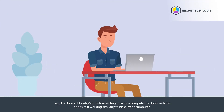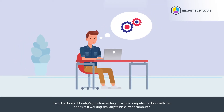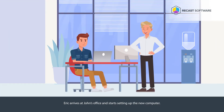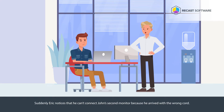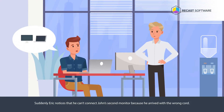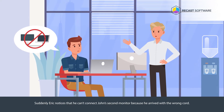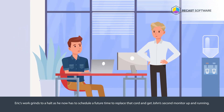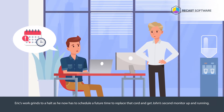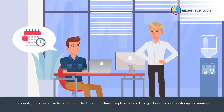First, Eric looks at Config Manager before setting up a new computer for John, with the hopes of it working similarly to his current computer. Eric arrives at John's office and starts setting up the new computer. Suddenly, Eric notices that he can't connect John's second monitor because he arrived with the wrong cord. Eric's work grinds to a halt as he now has to schedule a future time to replace that cord and get John's second monitor up and running.